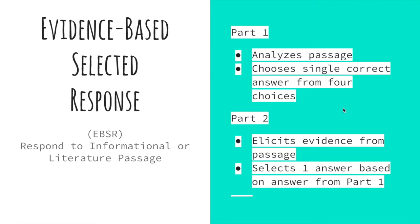The next question type is evidence-based selected response, or EBSR. Students respond to an informational or literature passage, and there are two parts to these questions. Part one asks them to analyze the passage and choose an answer from a multiple-choice list. Part two asks them to find evidence in the passage that will prove their answer to part one. Importantly, you must correctly answer part one to receive credit for part two — if part one is incorrect, you cannot receive credit for part two, as that would just show guessing.